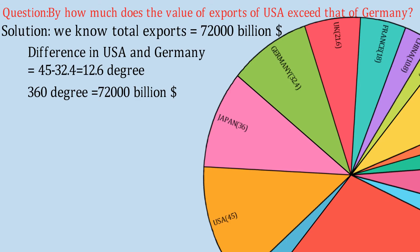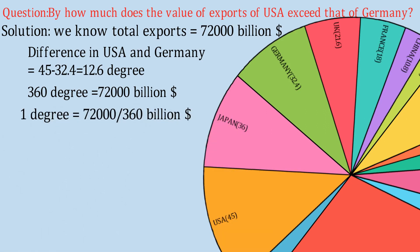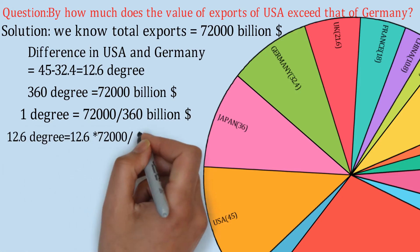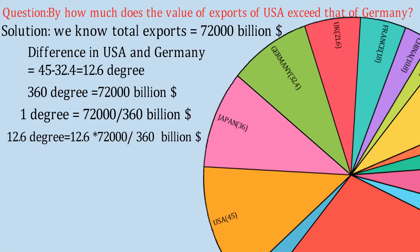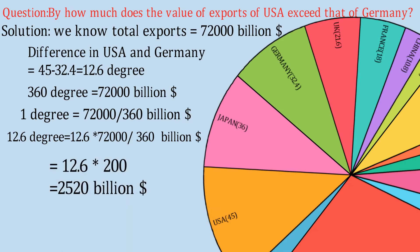Since the total global exports of 72,000 billion dollars correspond to 360 degrees, one degree equals 72,000 divided by 360 billion dollars. Therefore, 12.6 degrees equals 12.6 multiplied by 72,000 divided by 360, giving an answer of 2,520 billion dollars. These are the little shortcuts and logical approaches you must apply when solving data interpretation questions.